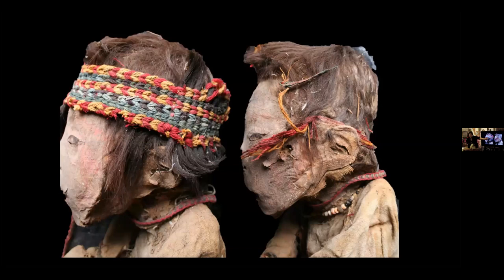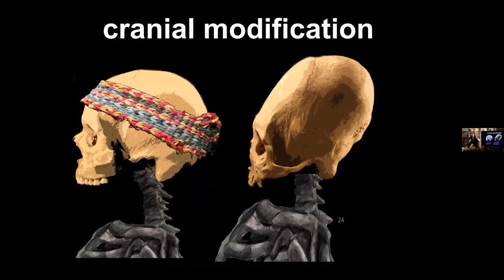When we realized the mummy's headband was actually holding a wig, and we removed the wig, we could see that the child had an artificially elongated head. This is a practice we call cranial modification. When a baby in ancient Apurimac was born, a few days after birth the mother or caregiver would start to wrap the head in turban-like bindings. They may have been bound to a cradle and the bindings were readjusted over time, left on for several years. By the time the child was about five or six, their skull had become remolded into an artificially elongated shape.